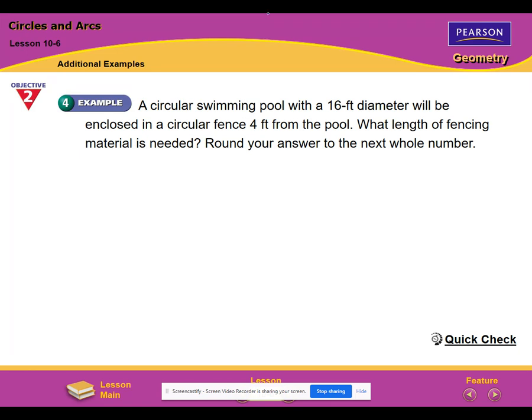A circular swimming pool with a 16 foot diameter will be enclosed in a circular fence four feet from the pool. Now I could easily skip this example, but I don't want to because in my childhood, I actually owned this pool. That's not a joke. We had an above ground four foot deep pool and it was 16 feet across. And my dad built a deck all the way around it. So for nostalgic purposes, I need to include this example.